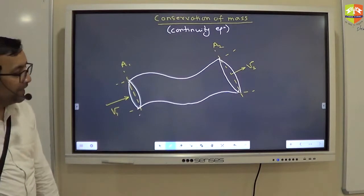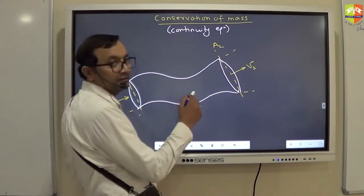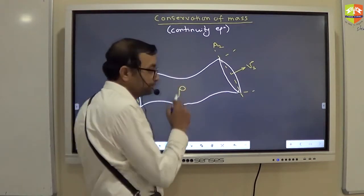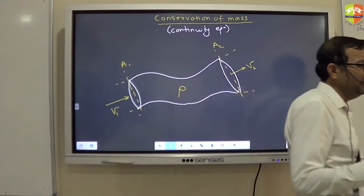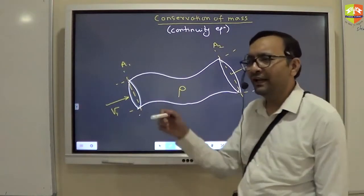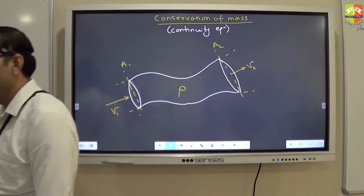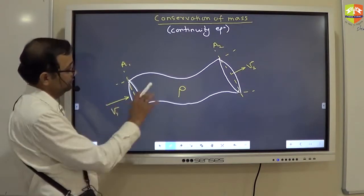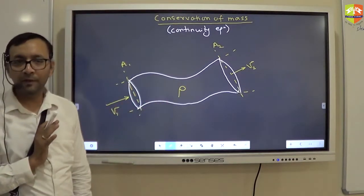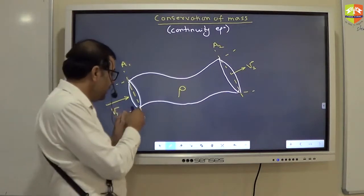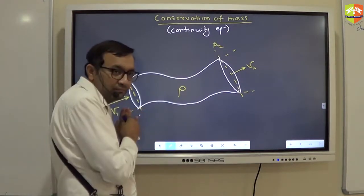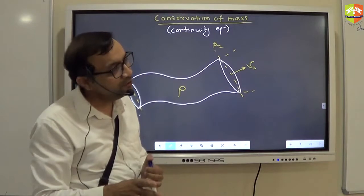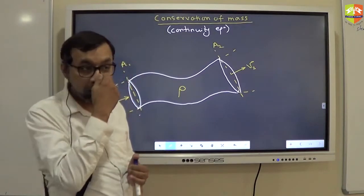Anyways, this is the scenario. And let's say density of the fluid is rho. Why I am writing density here? Because till now, I have been using density and pressure to define the property of the fluid. So, I will be using that terminology only. This is the situation that is happening. Now tell me, suppose in one second, one kg mass goes in. In one second. So, in one second, how much mass will go out? One kg only?